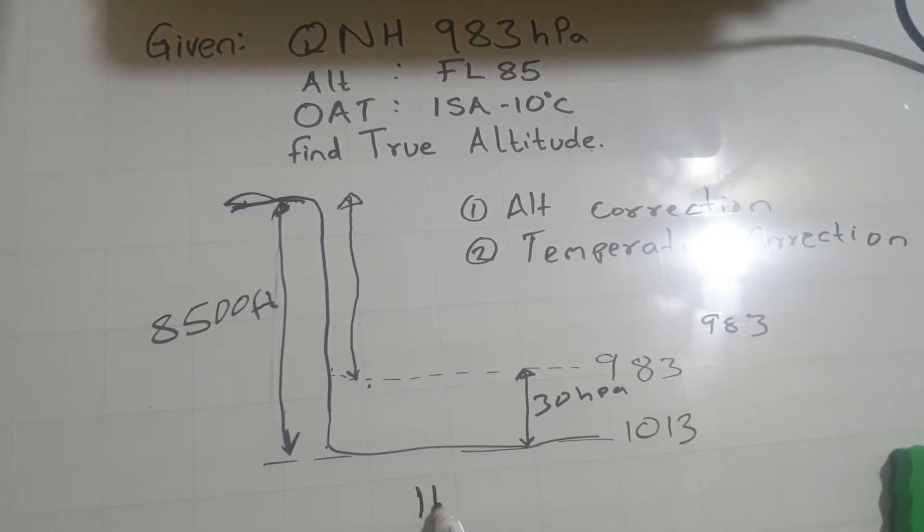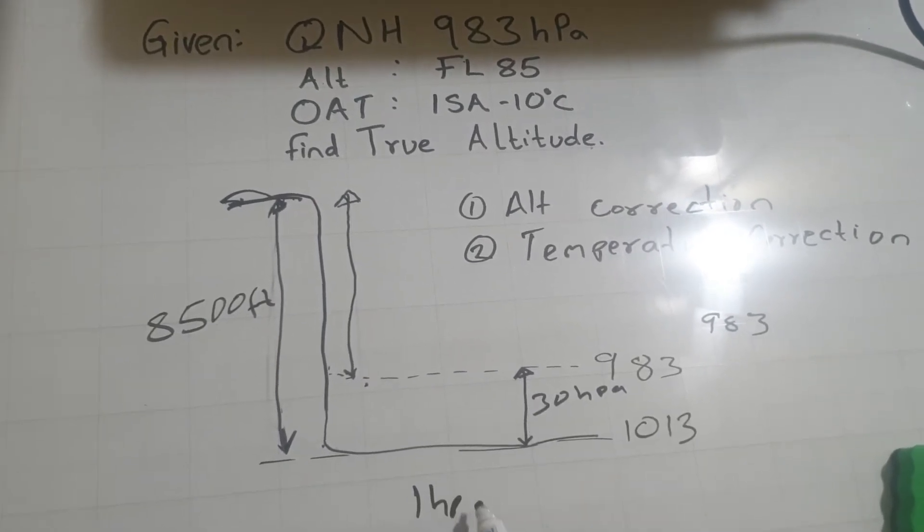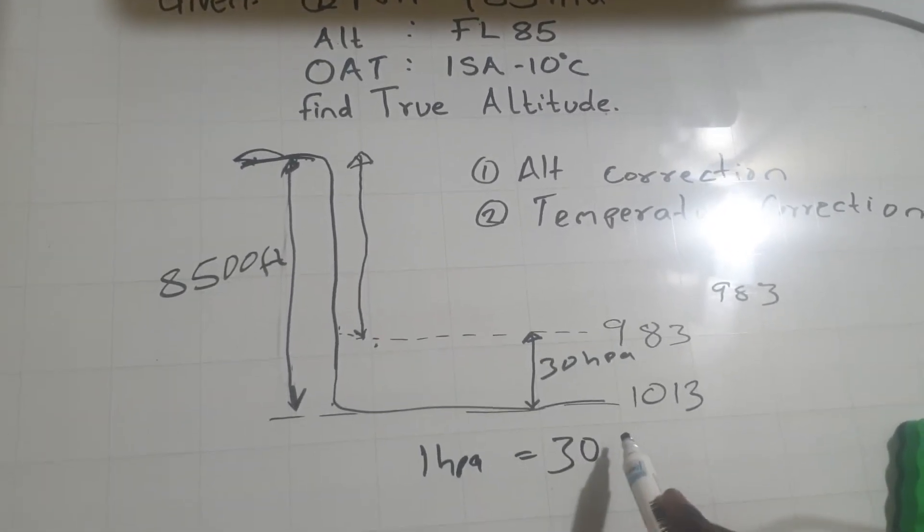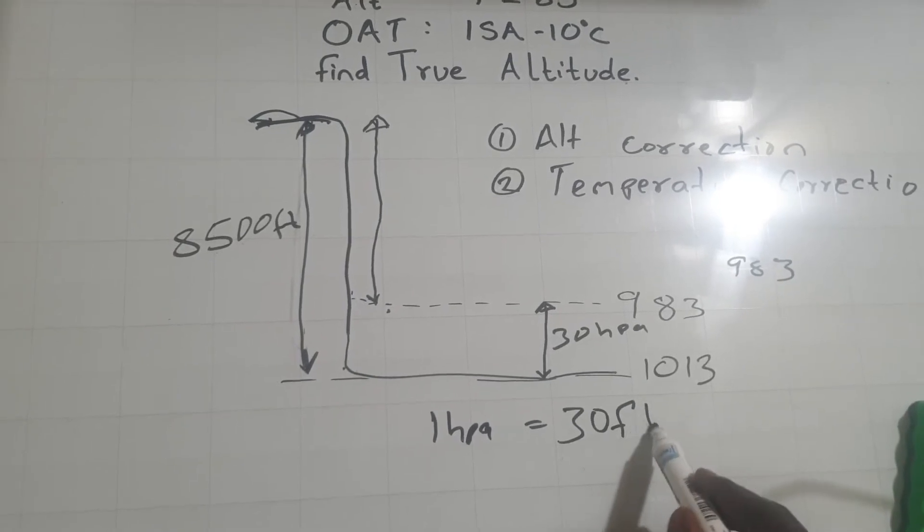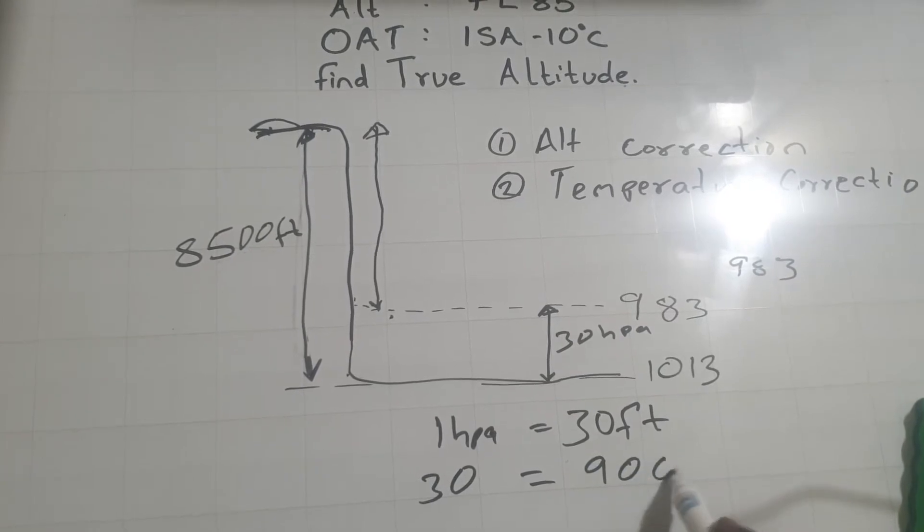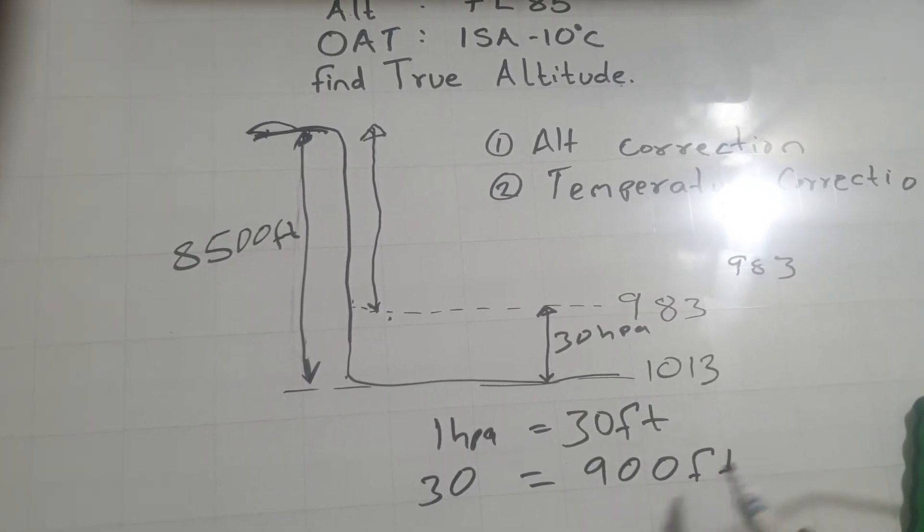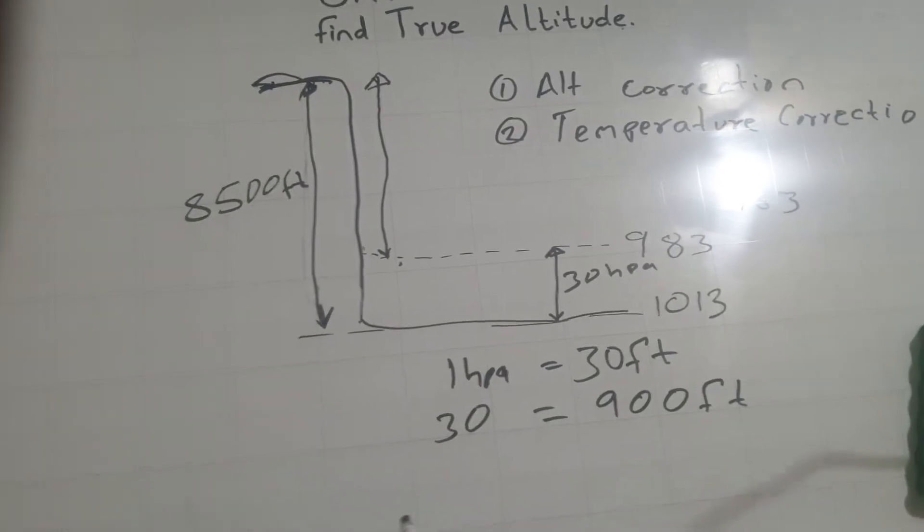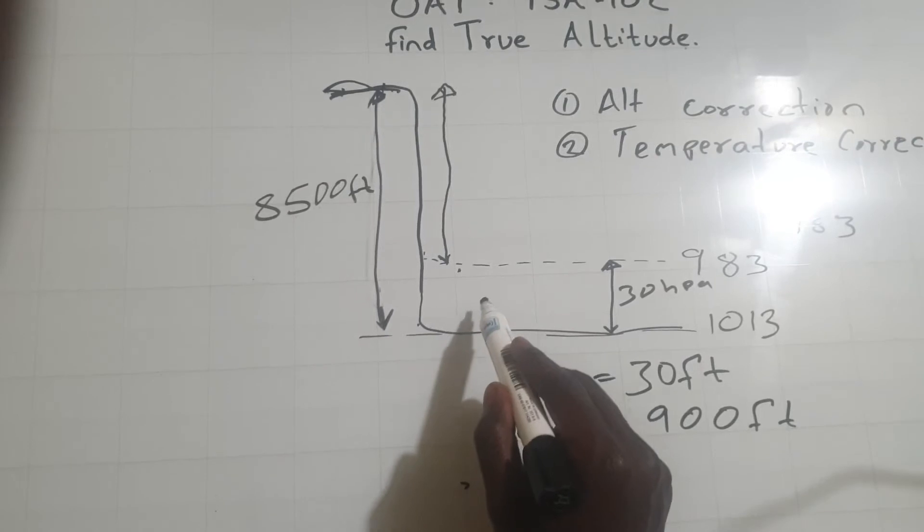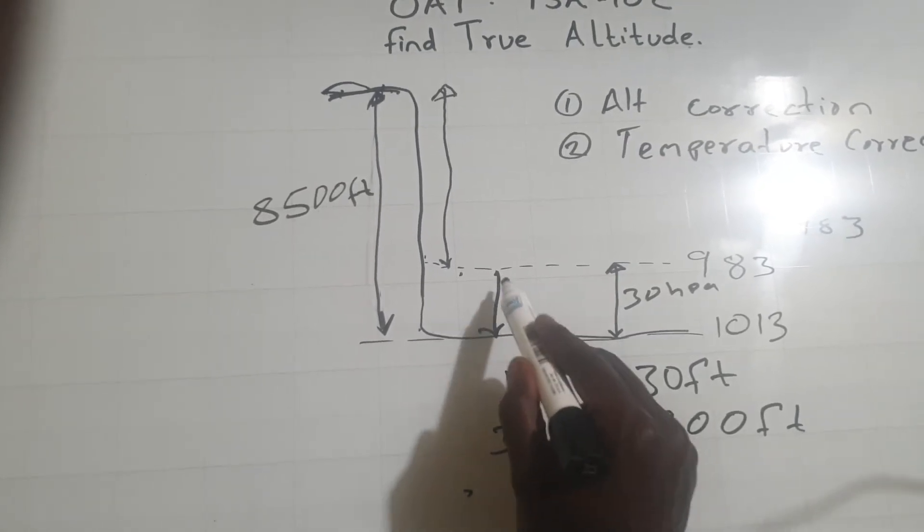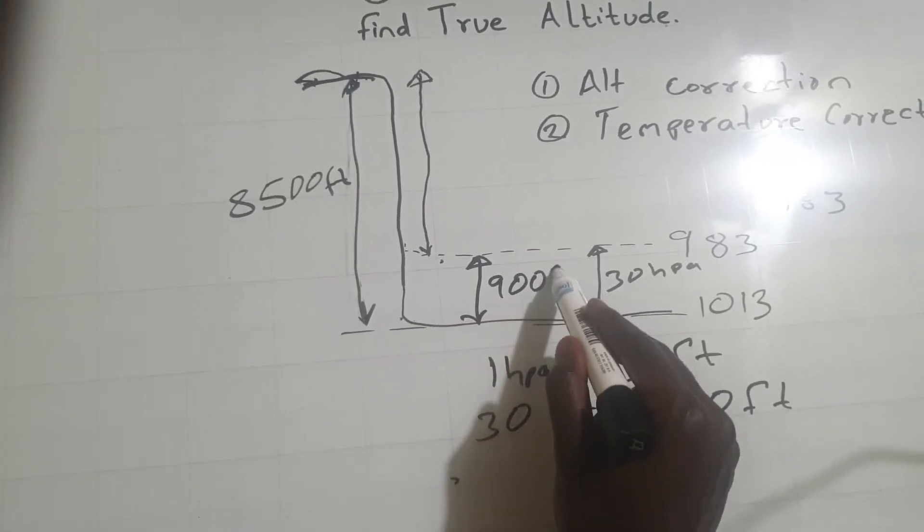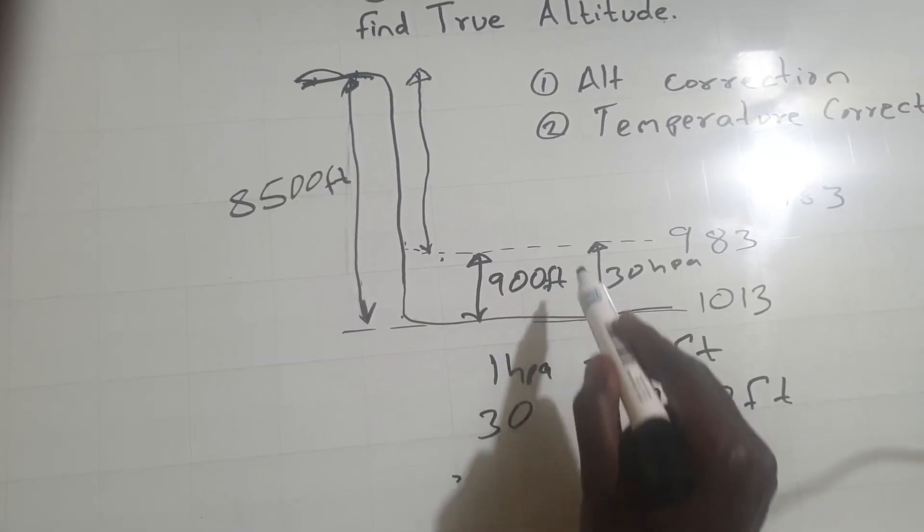So we know that 1 hectopascal above 1500 feet is equivalent to a change of 30 feet. What about 30? It will be 30 by 30, which is 900 feet. So the first step of correction is, if from here to here is 8,500, and then here is 30 hectopascal, which you have found is an equivalent of 900 feet.